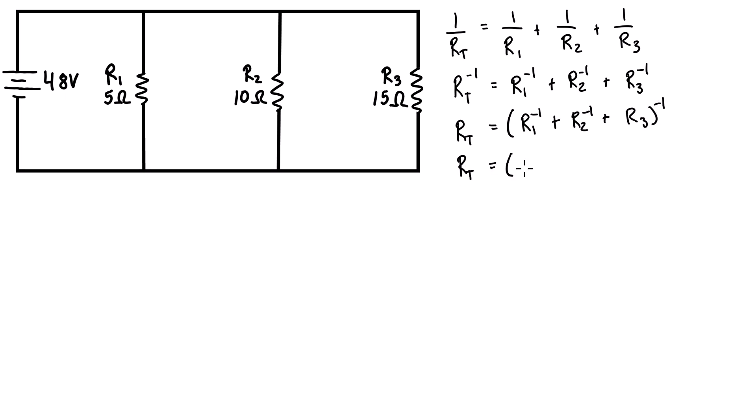We're going to inverse both sides, so we can fill this in with the numbers that we have. It's going to be 5 inverse plus 10 inverse plus 15 inverse, and we're going to take the inverse of that summation. That's going to give us 0.3667 inversed.